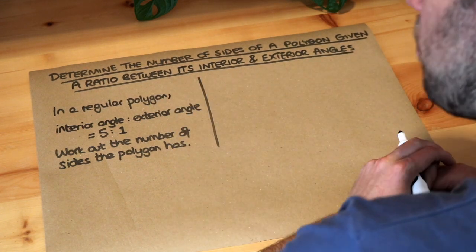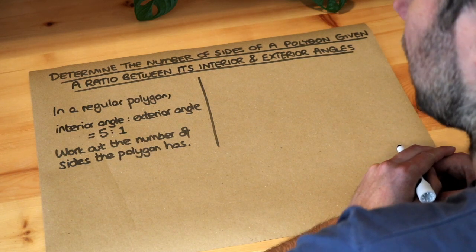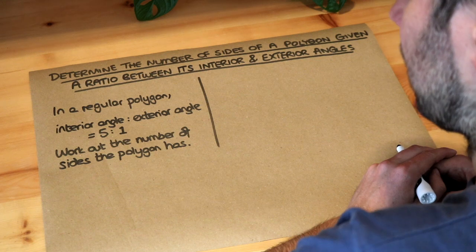In a regular polygon, the ratio of the interior angle to the exterior angle is 5 to 1. Work out the number of sides the polygon has.